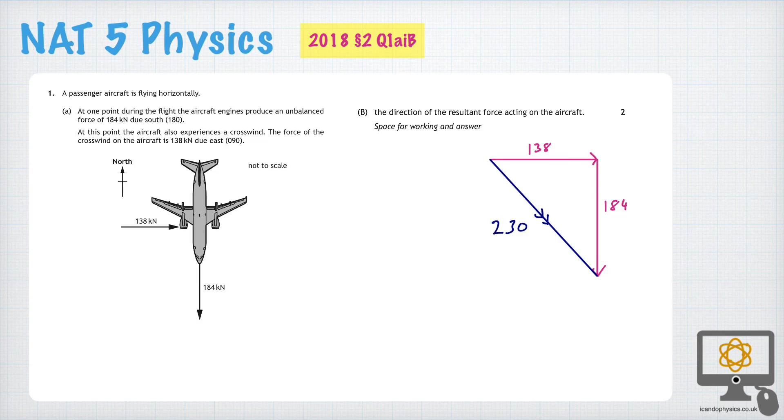A scale diagram would mean that you'd have to ensure that this length here was drawn either as 13.8cm or the half of that, this was drawn as 18.4cm or the half of that, and they were drawn at right angles, and therefore this here would be either 23cm or the half of it as well, if you choose a scale of 0.5. And then you could determine by using a protractor what the angle is right here.